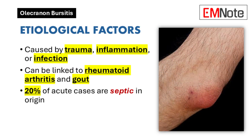Etiological Factors: Multiple factors can trigger olecranon bursitis, including trauma, inflammation, and infection. Underlying conditions such as rheumatoid arthritis and gout can contribute to its development. Notably, approximately 20% of acute cases have a septic origin, highlighting the importance of proper assessment.